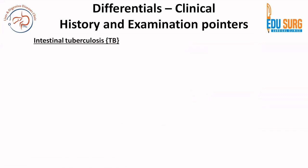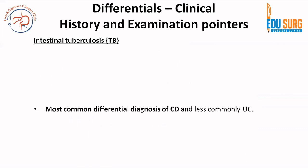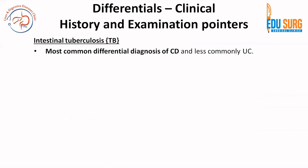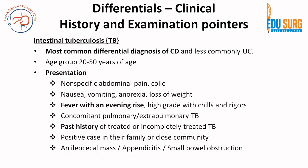To start with the clinical history part: in India, intestinal tuberculosis is one of the most common differential diagnoses, especially for Crohn's disease but less commonly for ulcerative colitis. It is a very common disease seen in our practice. Just to highlight some of the common clinical history pointers — the age group is 20 to 50 years of age, and presentation can be varied.